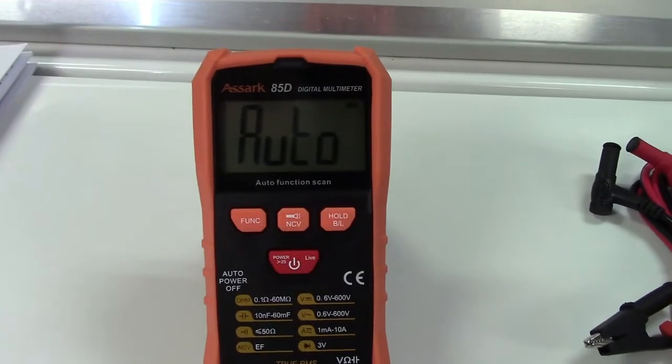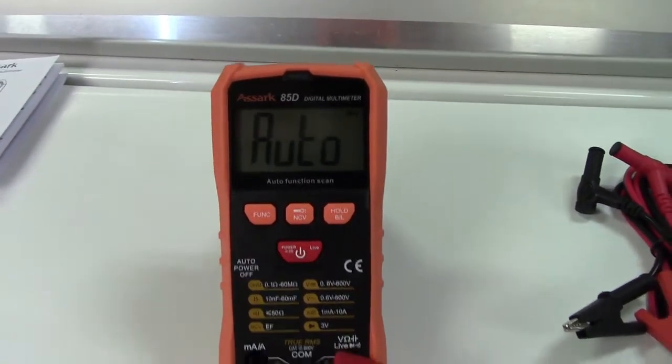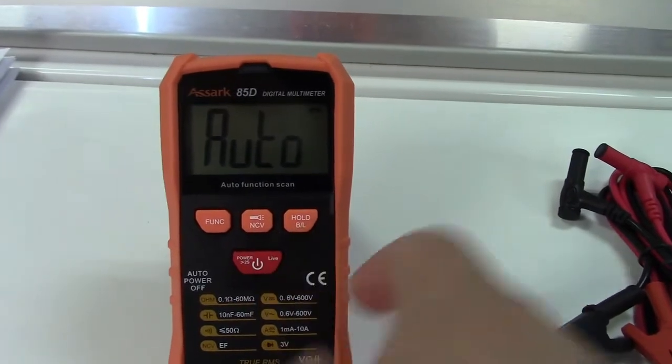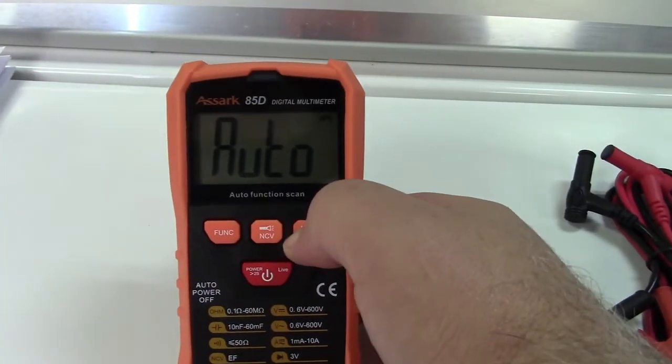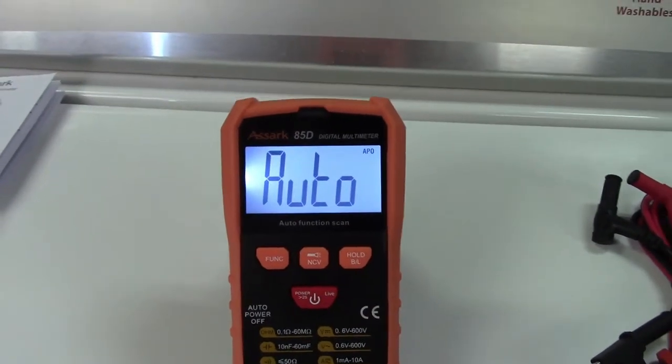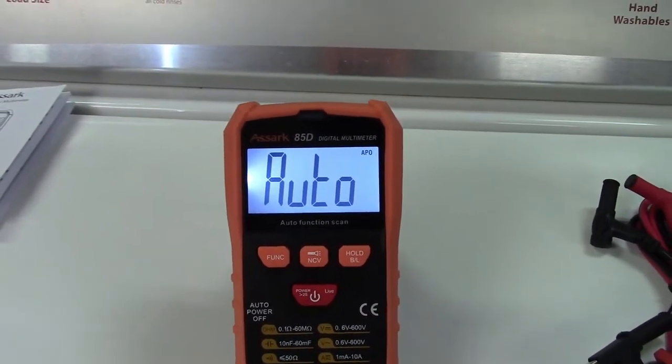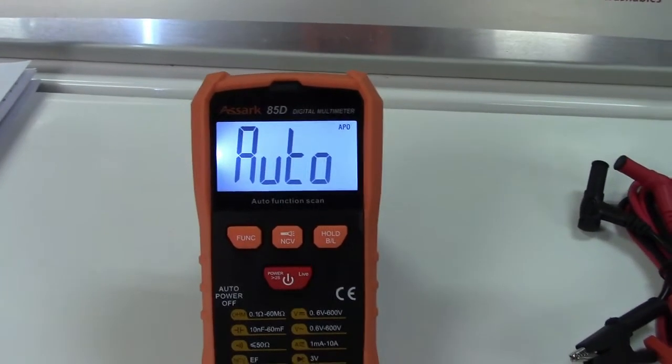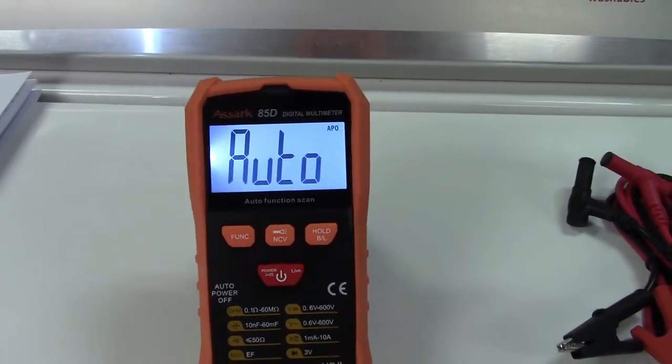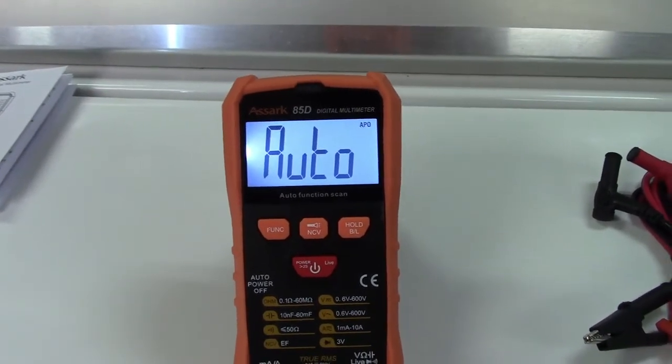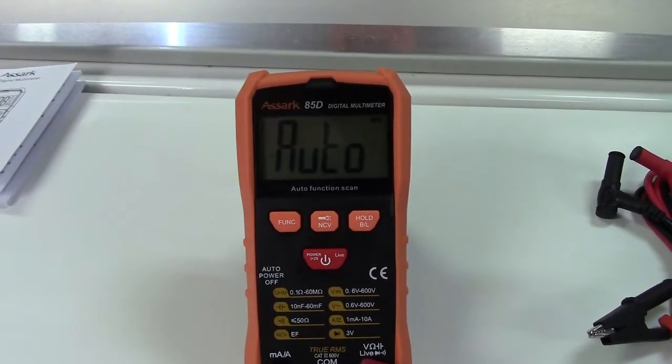This meter has a hold function. So when you get a reading on the display, you can press the hold button right there. That button doubles as the backlight button for the screen. So if I hold that for a couple seconds, it'll turn on. It does only stay on for 15 seconds and go out. But of course, that is a battery saving measure. You've heard it beep a few times. So that means it does have a continuity tester. And let me get this set up and we'll test a few things with it.